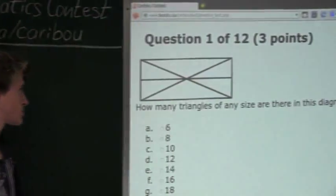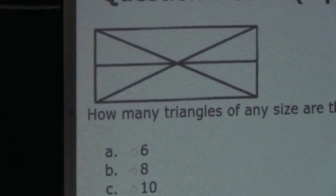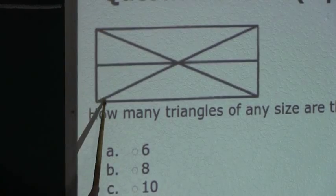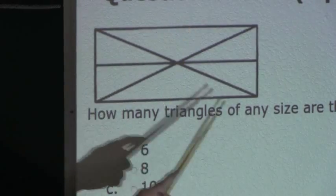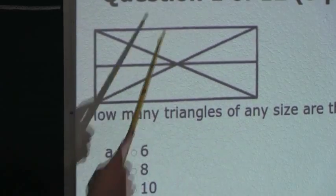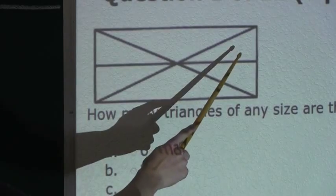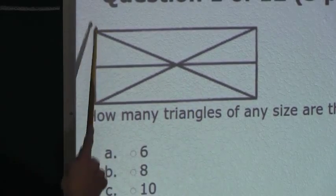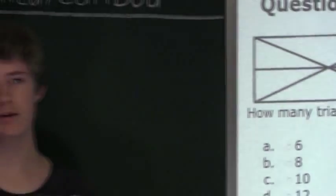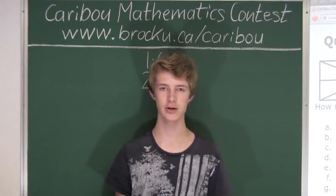Now let's look at all the triangles that consist of three single triangles. We know there is this triangle, which consists of these three triangles. This triangle, which consists of these three triangles. This triangle, which consists of these three triangles. And this triangle, which consists of these three triangles. So we know that there are four triangles that consist of three single triangles.